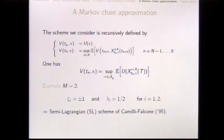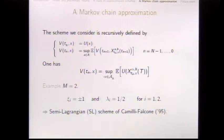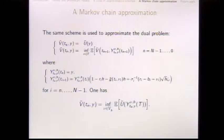This class of schemes is already known in the literature for some special cases. For instance, approximating the normal distribution with only two points — moving in one or the other direction with probability one-half — gives what is called a semi-Lagrangian scheme; this particular case was presented in a paper by Camilli and Falcone. The same scheme also applies to the dual problem: the approximation of the dual value function capital Ṽ is the solution of another optimal control problem approaching the original dual one.